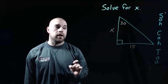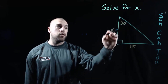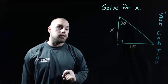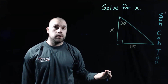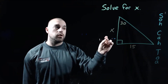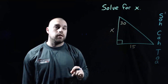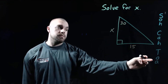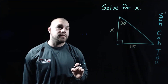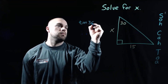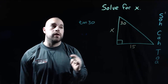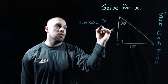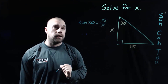In our next example, we've got a 30-degree angle. Our vertical side is X and we've got 15 going across the bottom. We need to figure out which trig ratio to set up. X is adjacent to the 30-degree angle and 15 is the opposite side, so we're going to use tangent. We set up: tangent of our 30-degree angle equals the opposite side 15 over the adjacent side X.